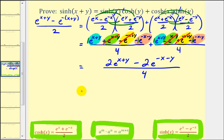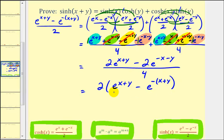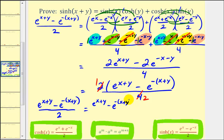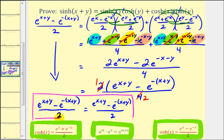The two terms in the numerator share a common factor of two. Factoring out two — and also factoring out a negative from the second exponent, which changes the sign of x and y — leaves us with e to the x plus y minus e to the negative quantity x plus y, all over four. The two and the four simplify: two simplifies to one and four simplifies to two. The simplified right side equals e to the x plus y minus e to the negative quantity x plus y, divided by two — exactly the left side. This completes the proof.